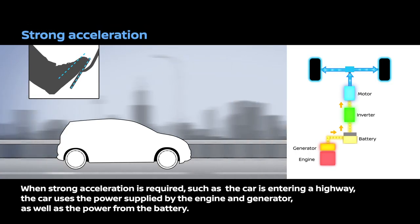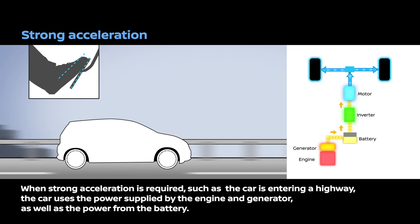When strong acceleration is required, such as the car is entering a highway, the car uses the power supplied by the engine and generator as well as the power from the battery.